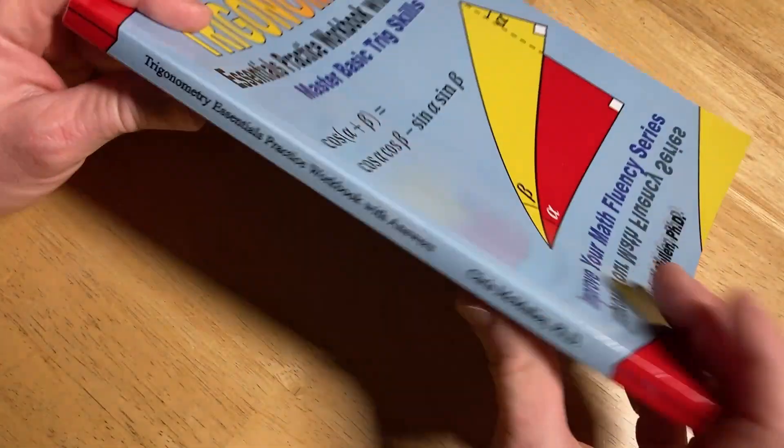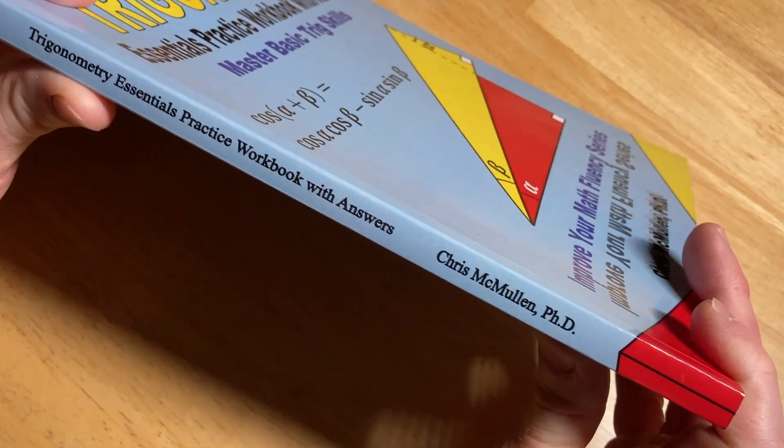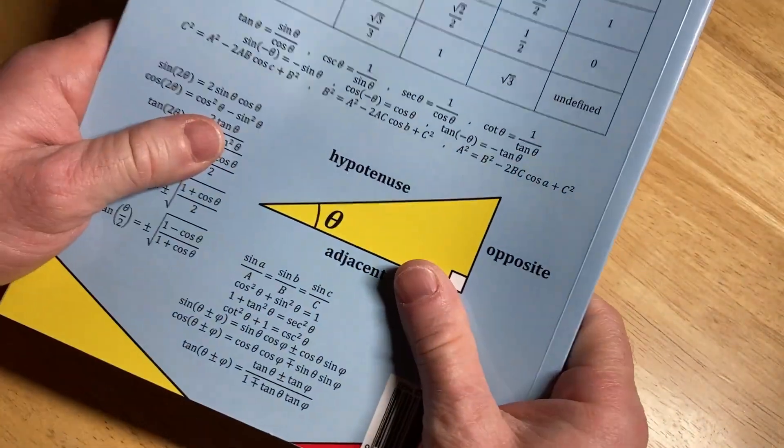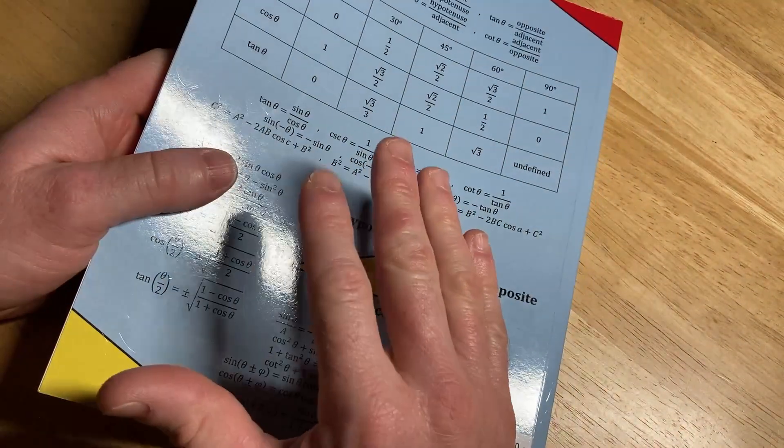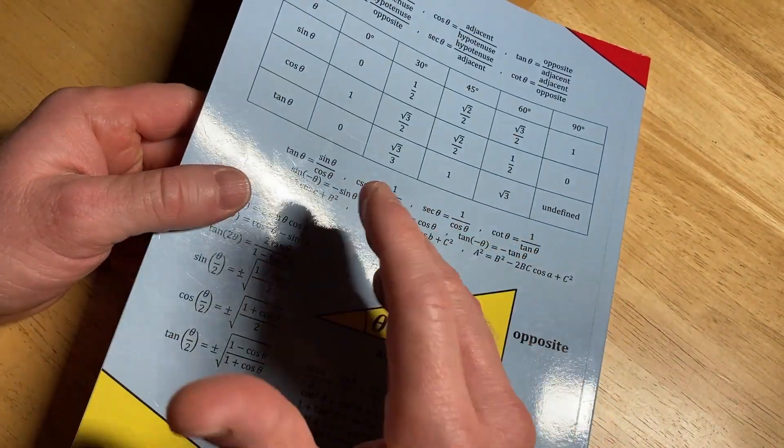Now, it doesn't have everything that a regular trig book would have. So it's not a trig textbook. It's a workbook, which means that it has some of the topics, and it has tons of exercises, and it has answers to all of those exercises in the back of the book.